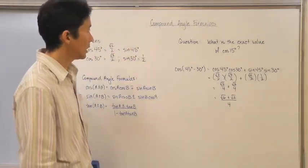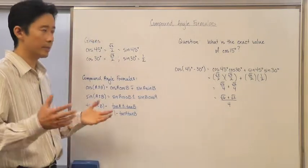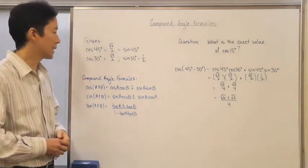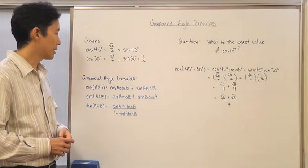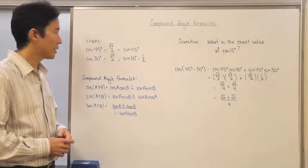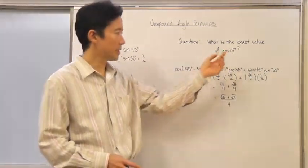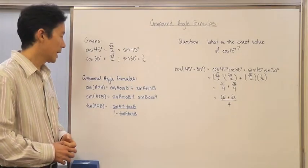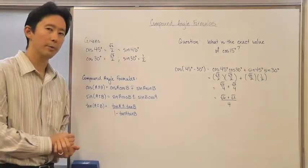What mathematicians created were the compound angle formulas — they determined that you can find the cosine of 15 degrees so long as you use what is called the compound angle formulas.